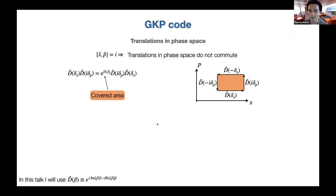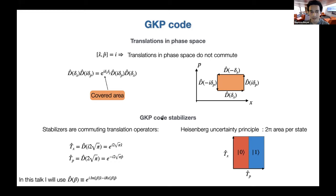By now everybody has some idea of what's going on with the GKP code, but I'll go through it to remind everyone. Quadratures in phase space do not commute, and one consequence is that displacements in phase space in general do not commute either. If one traces a path in phase space and comes back to the origin, the phase acquired will be proportional to the covered area. Displacements do not commute except when the covered area is a multiple of 2π.